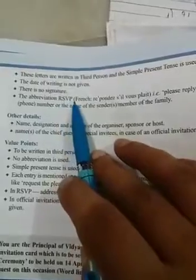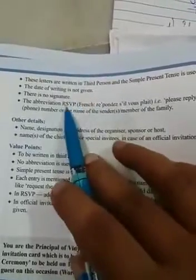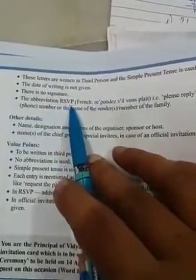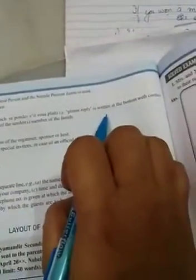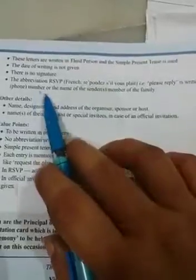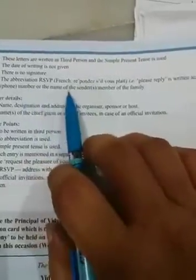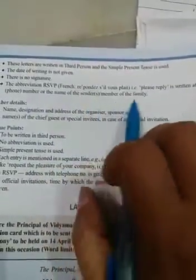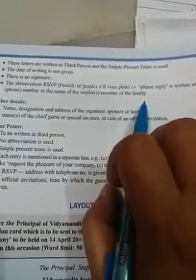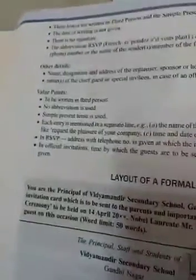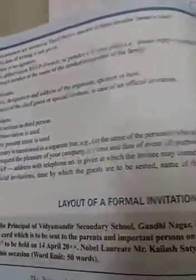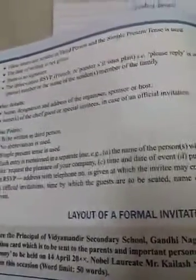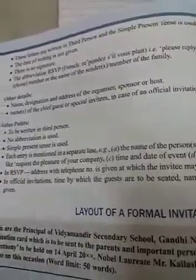The abbreviation RSVP — its French meaning is 'please reply' — is written at the bottom with the contact phone number or the name of a member of the family. For example, RSVP the Aurora families, or the Sandhu families, like that.